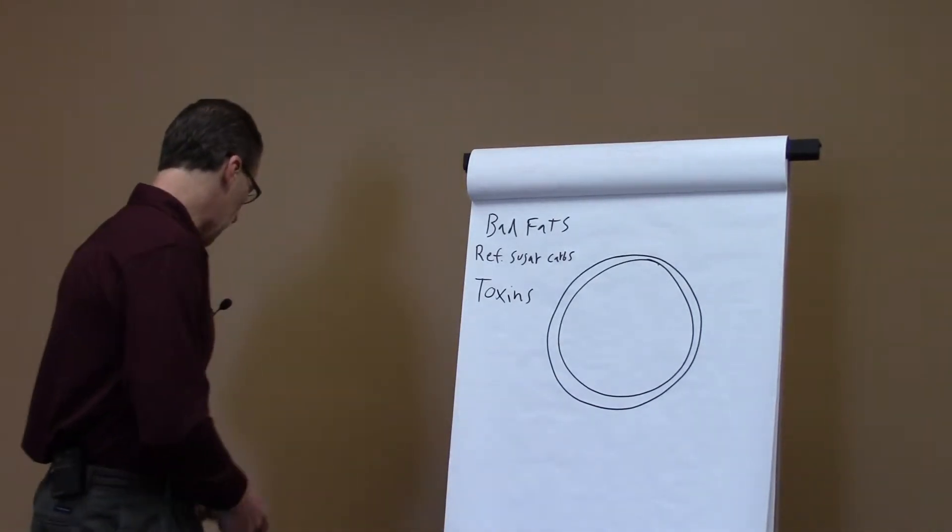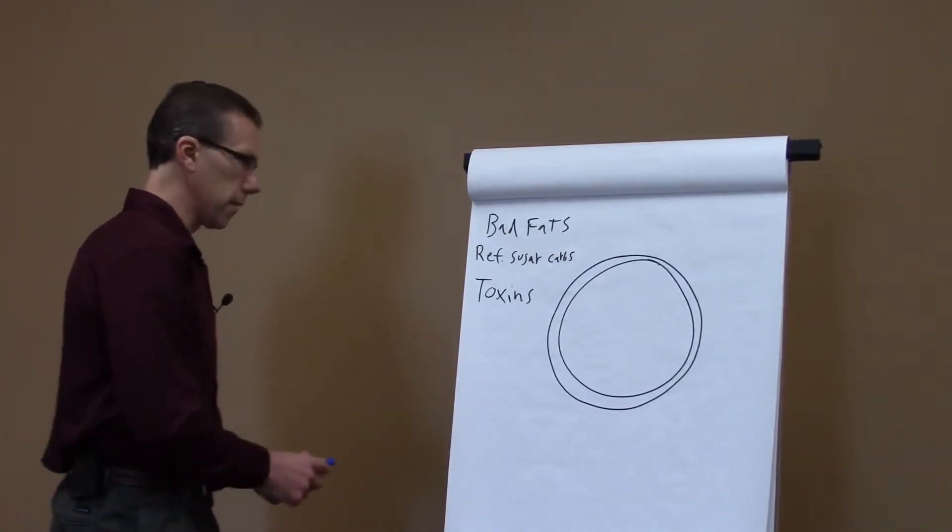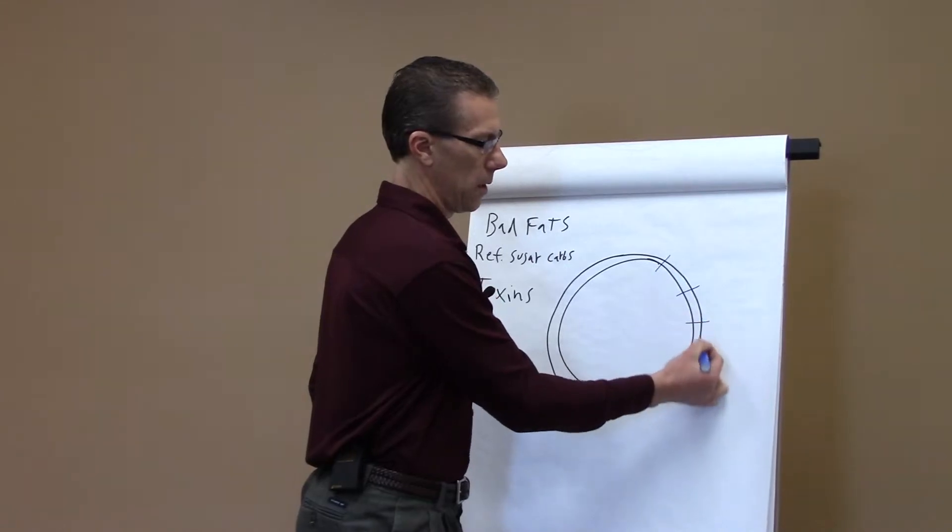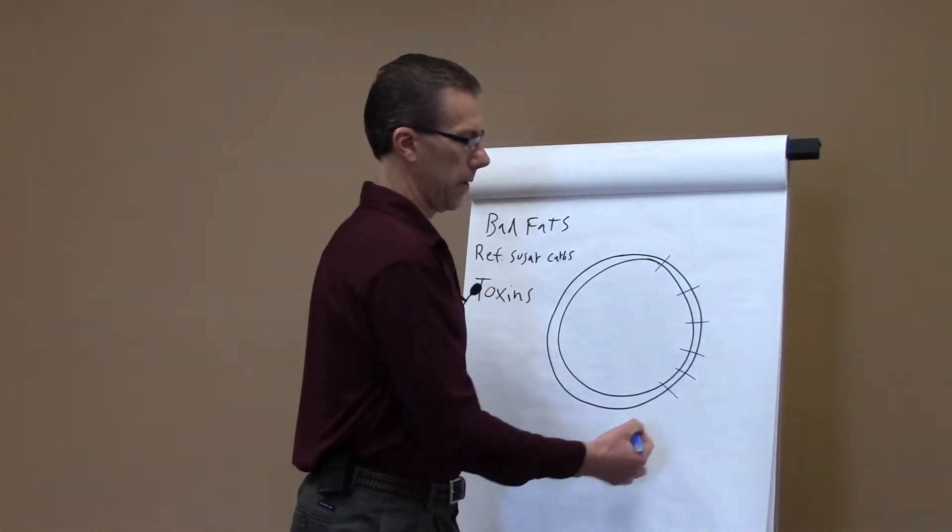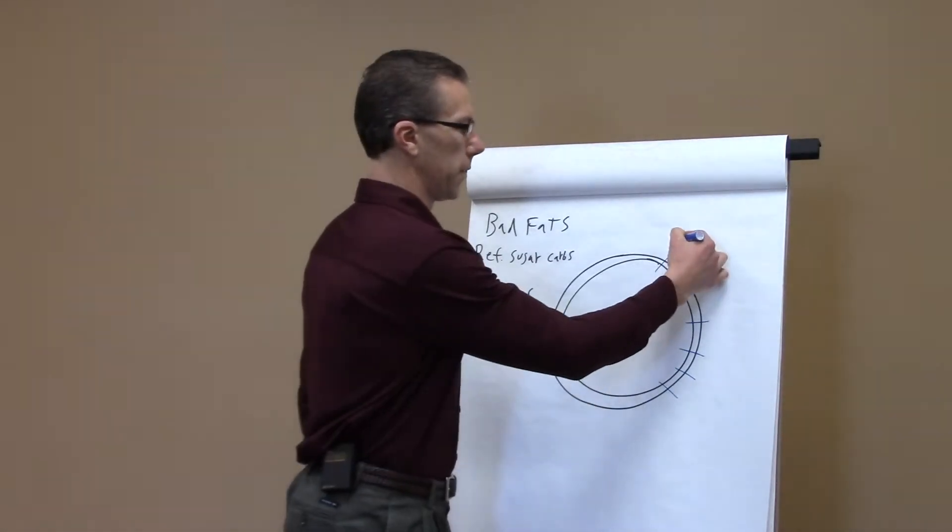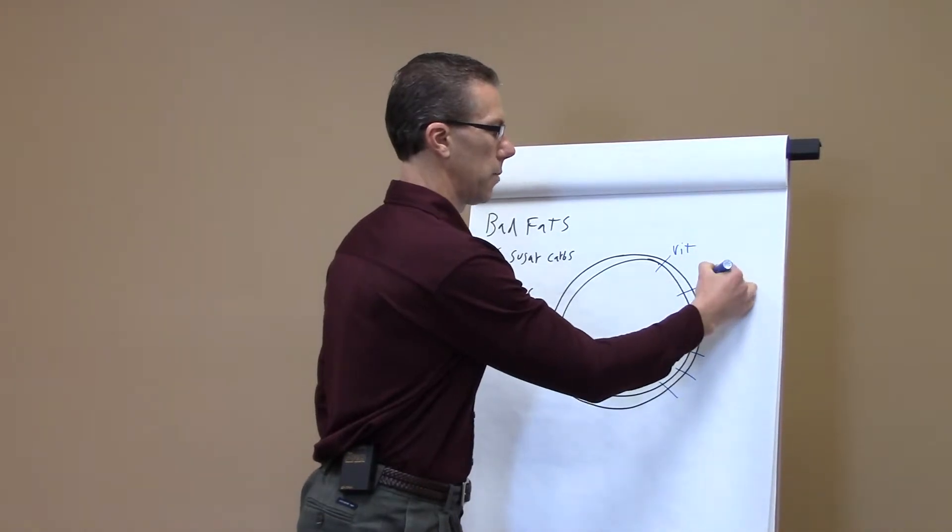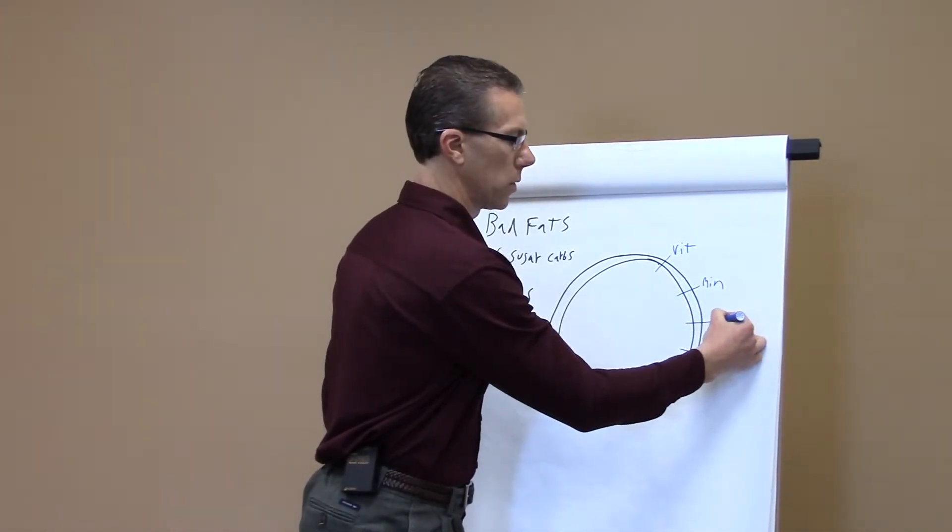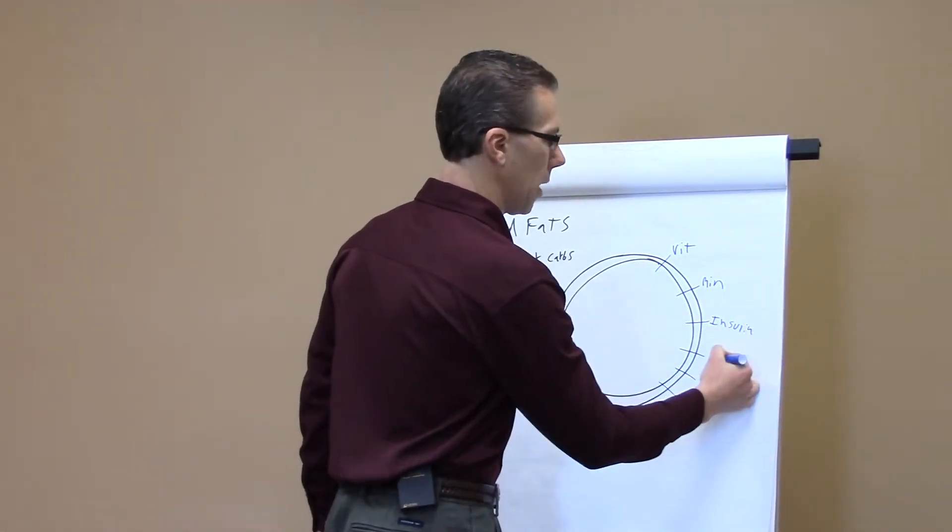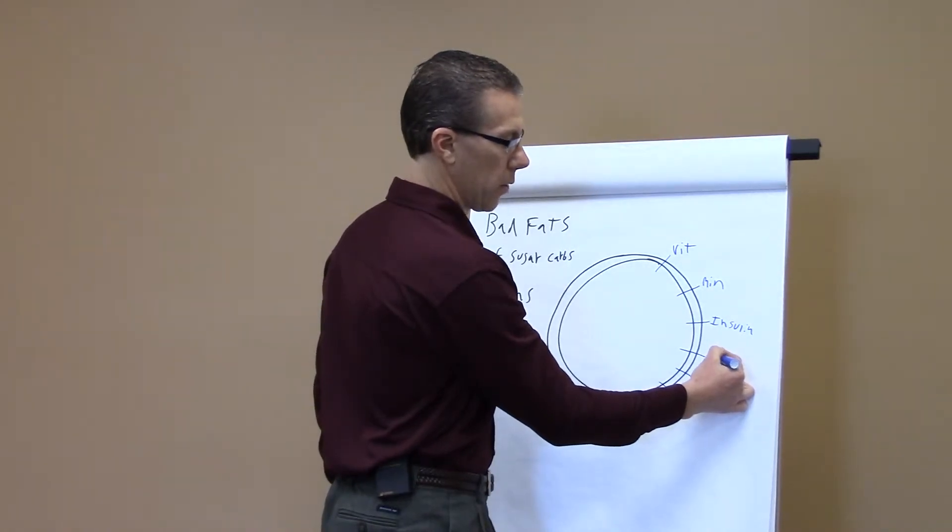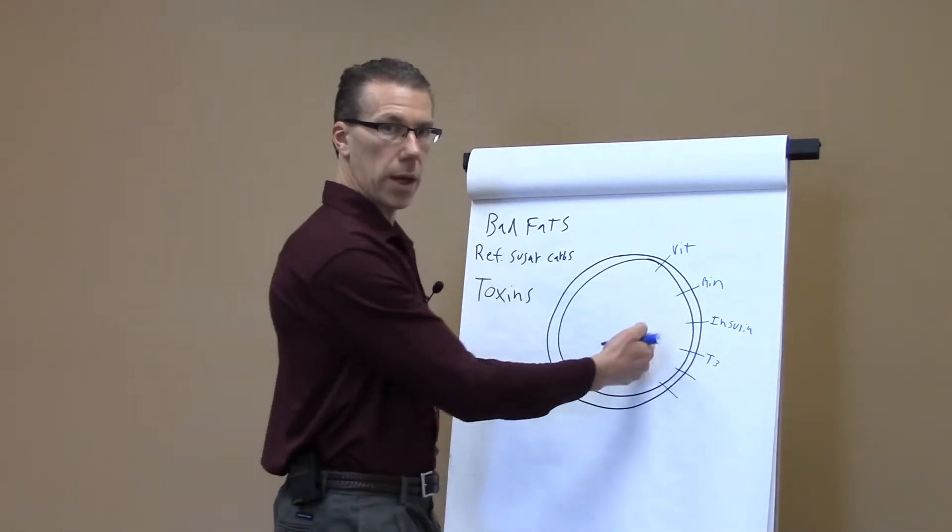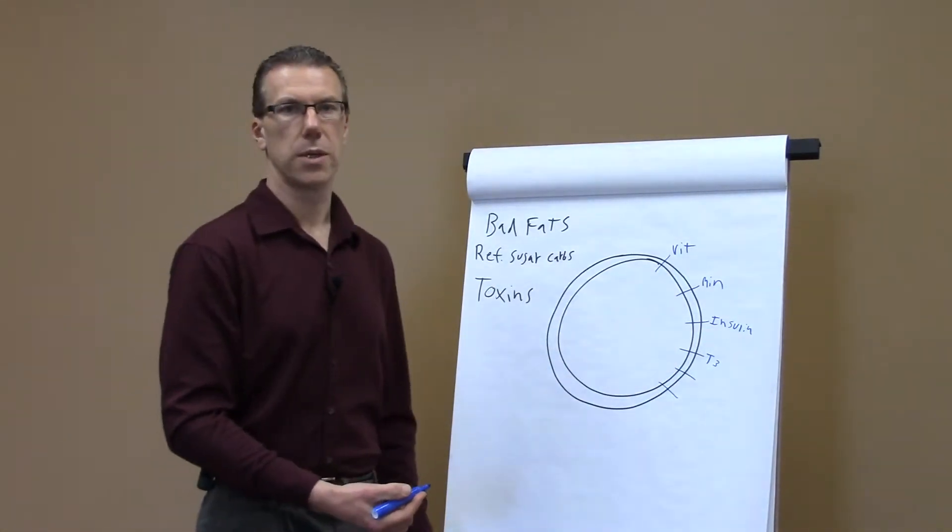On the actual bilayer of the cell, where it's believed that a lot of the brains of the cell exist, there's these little things called receptors. Receptors allow the cell to receive different nutrients like vitamins or minerals, hormones like insulin, and even other hormones like thyroid hormone. So T3 thyroid hormone, these cells need to be able to recognize these hormones so that the cell can respond to them.